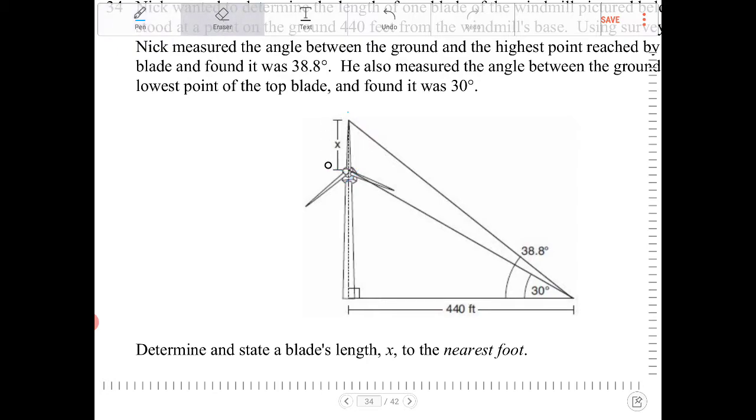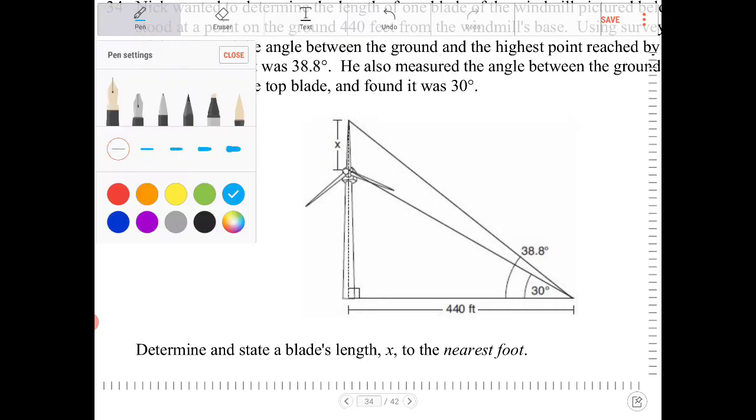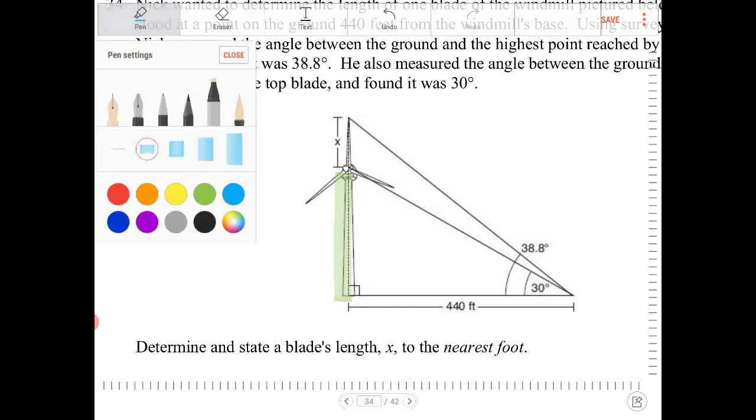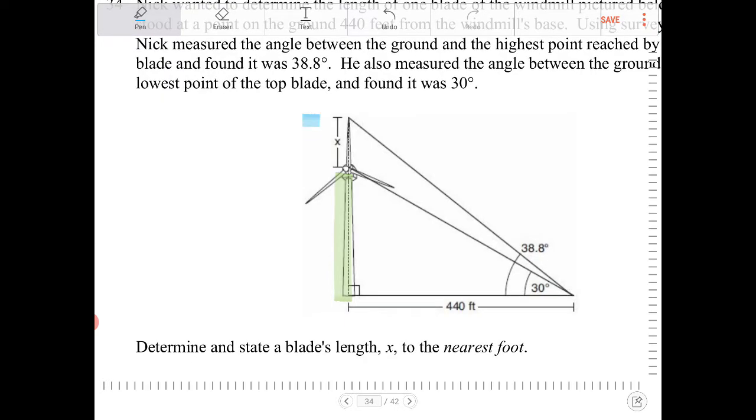They're calling it x. In order to determine what that is, I see we have two right triangles. The strategy would be to determine the height I'm highlighting in green, as well as the height I'm highlighting in blue. If we subtract those two heights, we will have the measure of x.